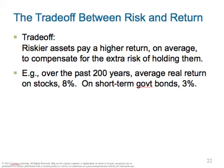There's a trade-off between risk and return. Riskier assets have a higher return on average to compensate for the extra risk of holding them — they have a greater standard deviation, swinging way high or way low. Over the past 200 years, the average real return on stocks is 8%. On short-term government bonds, it's only 3%. You don't get a great return from bonds, but they're far less volatile than stocks. You can make — or lose — a ton of money in stocks, but you'll rarely do either with government bonds.